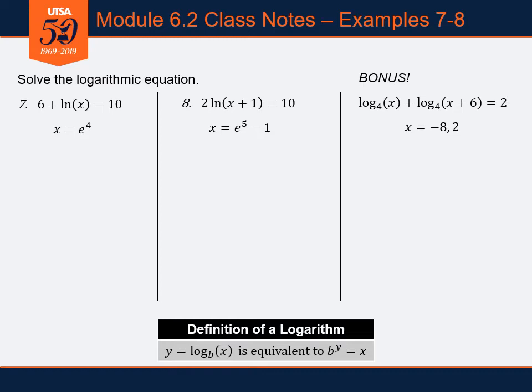Let's start with x equals negative 8. Plugging in: log base 4 of (−8) plus log base 4 of (−8 + 6). Immediately, recalling our basic properties of logarithms, we cannot take the log of a negative number. So log base 4 of negative 8 won't work — negative 8 is not a solution.